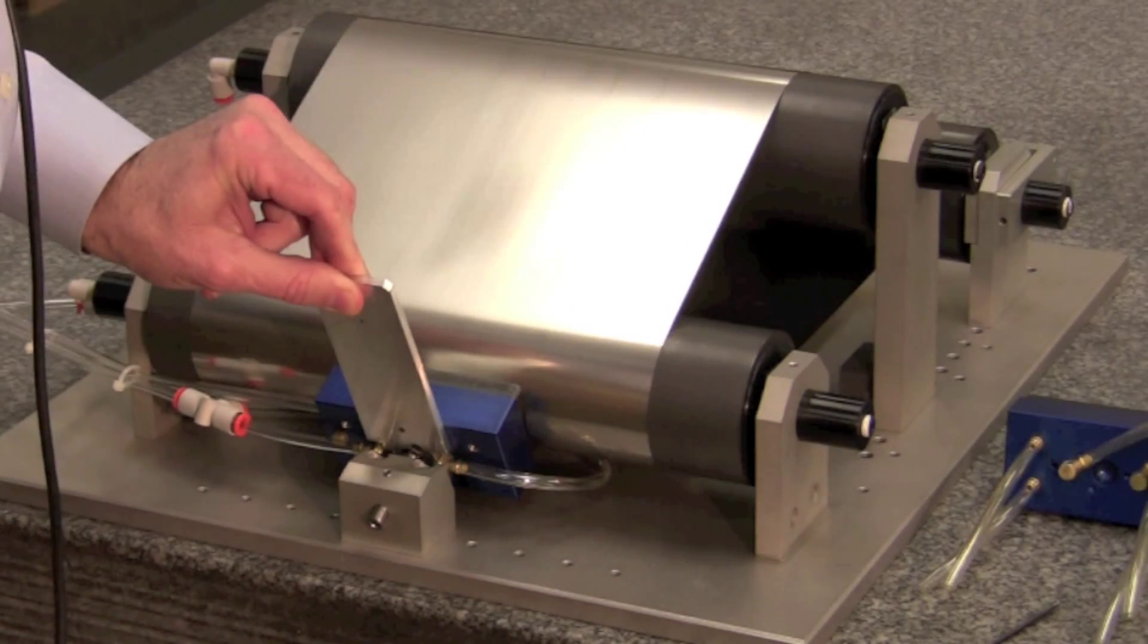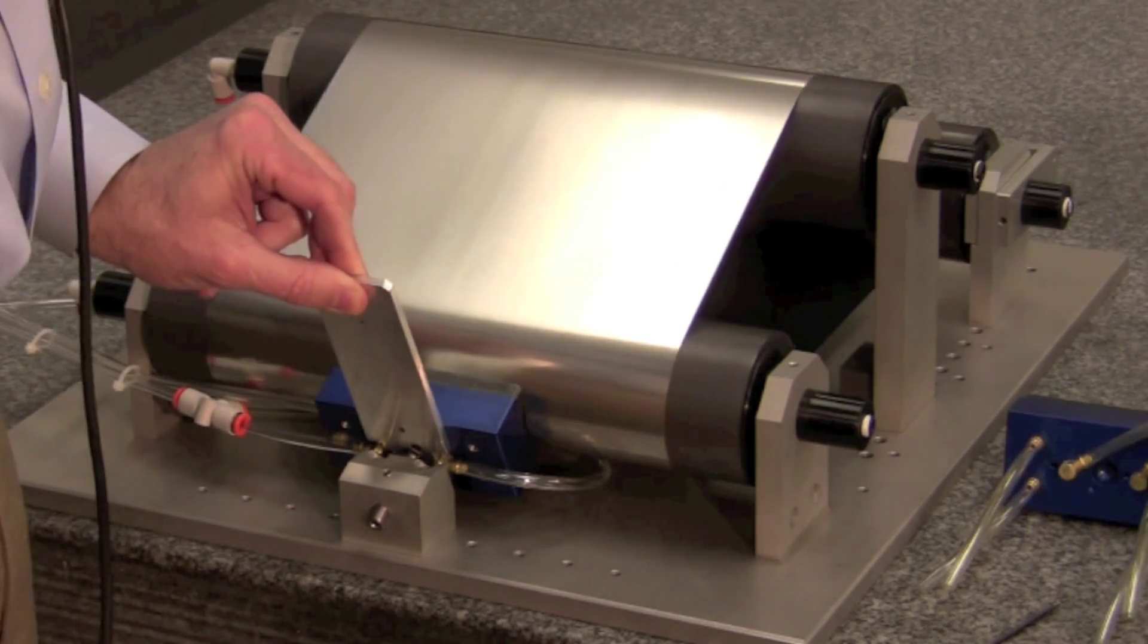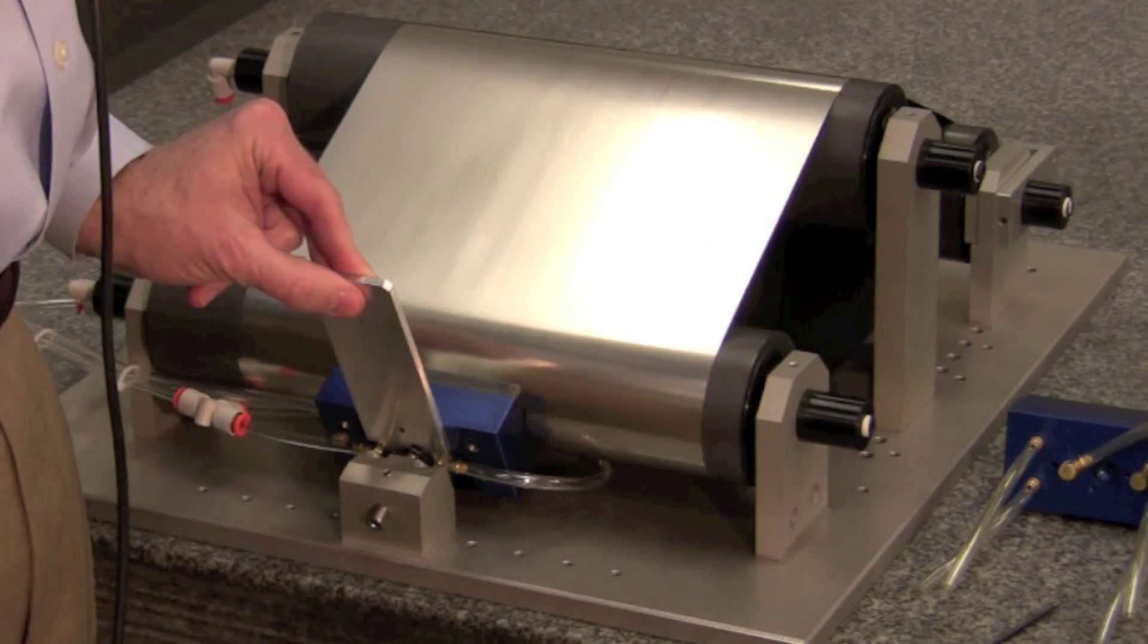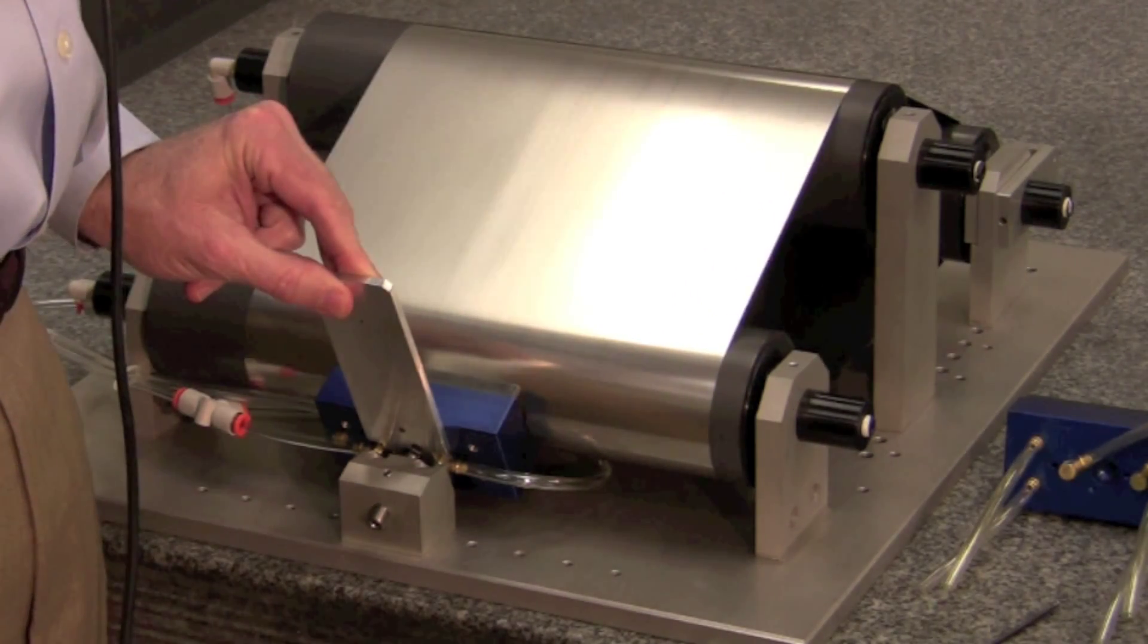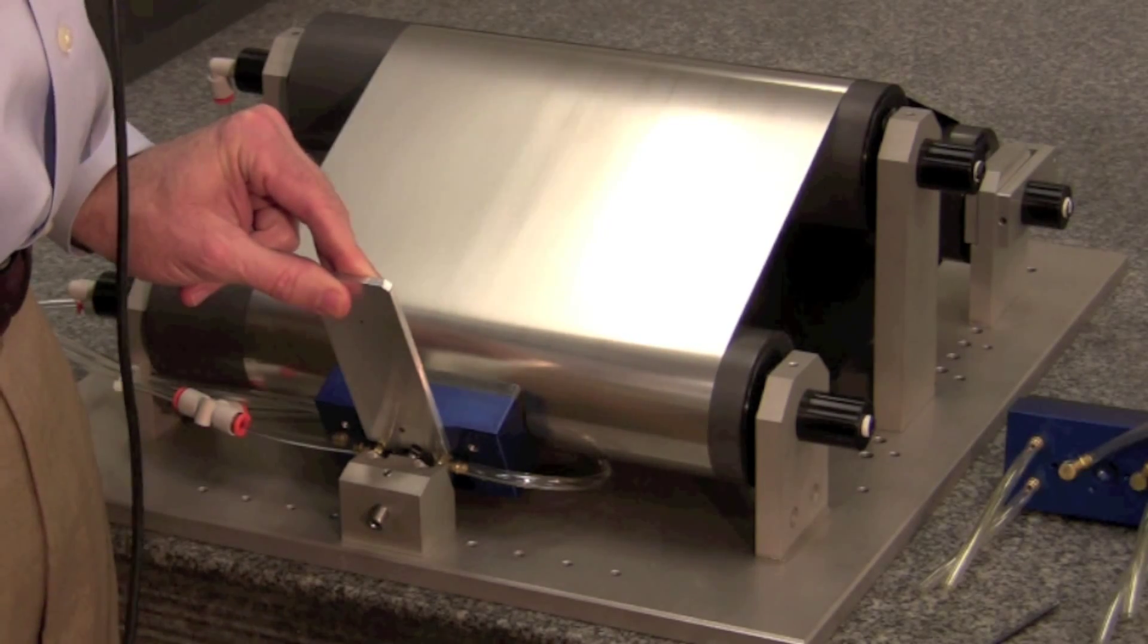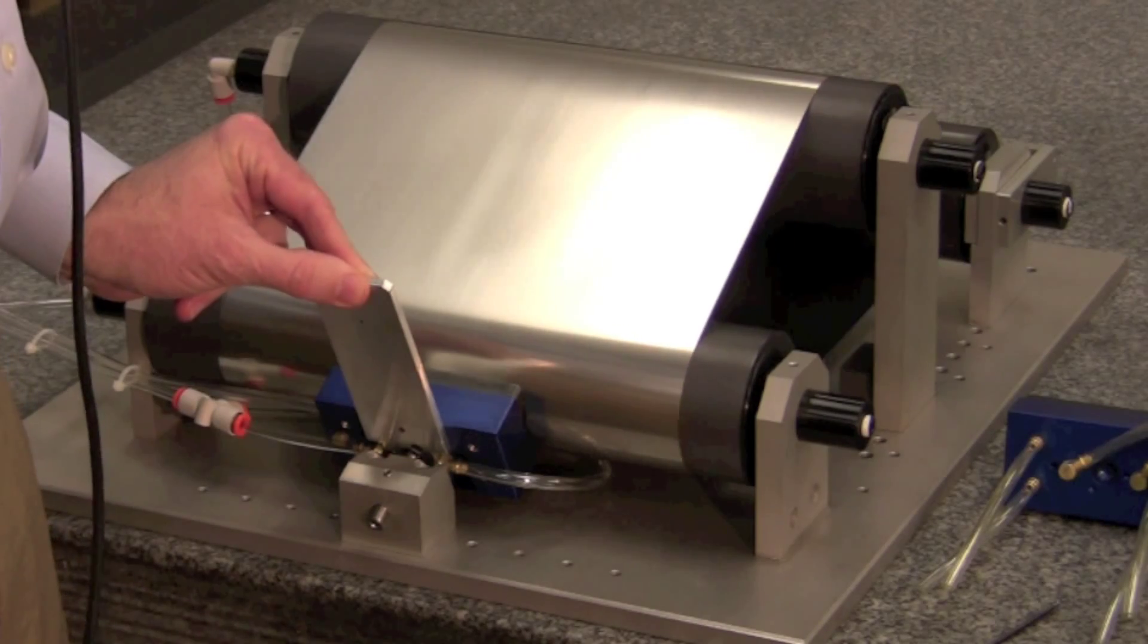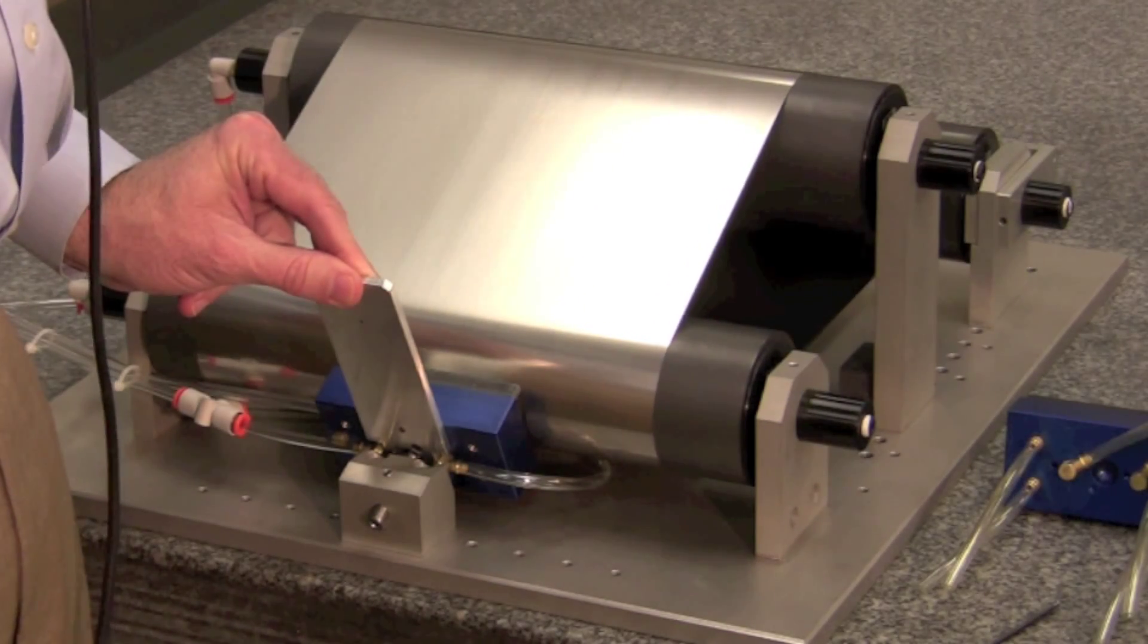So what we have here is a way of complete non-contact control of a web over rollers that do not turn and do not touch. And we can also control web tension to a fraction of a gram in multiple different areas.